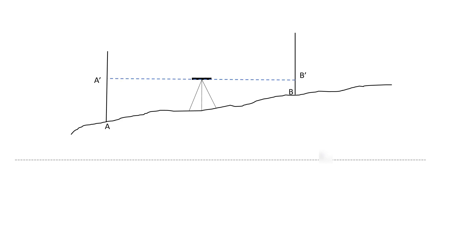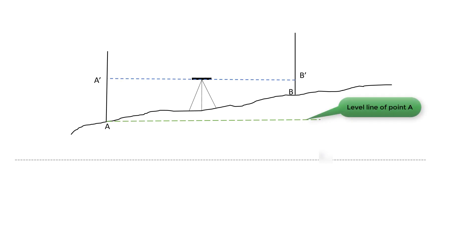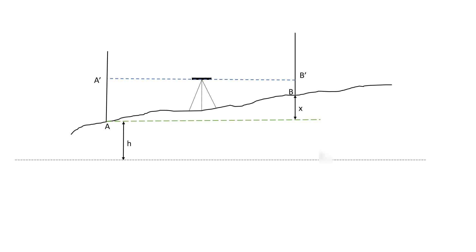If we draw a line that lies at the same elevation as point A, we can draw an imaginary line where every point on this line has the same level as point A. The reduced level or elevation of point A is the height by which it is above the datum line. In leveling, we transfer the level of a known point and use it to compute the level of an unknown point. Here, point A is the point whose elevation is already known, and we are transferring this level to point B.